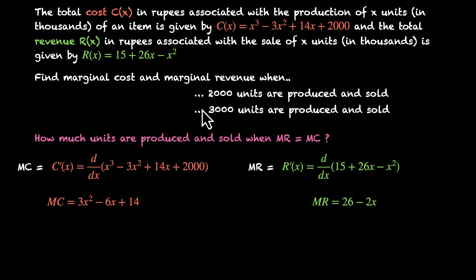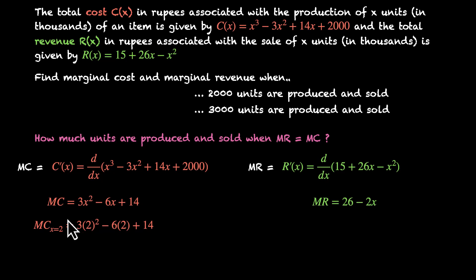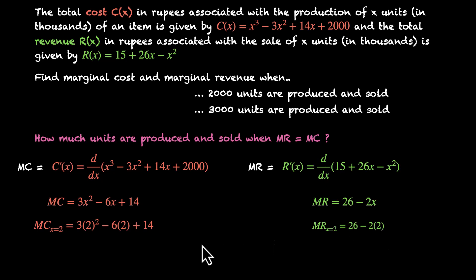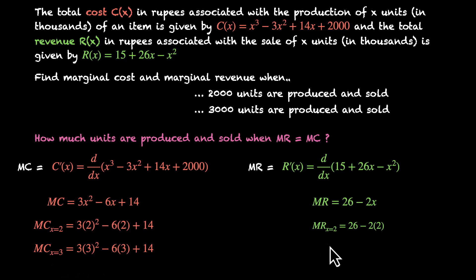Let's look at the first scenario: 2000 units produced and sold. Since units are in thousands, we need x = 2. We plug x = 2 into the marginal cost function and also into marginal revenue: 26 - 2(2). We then do the same for the next case of 3000 units, substituting x = 3 into both functions.